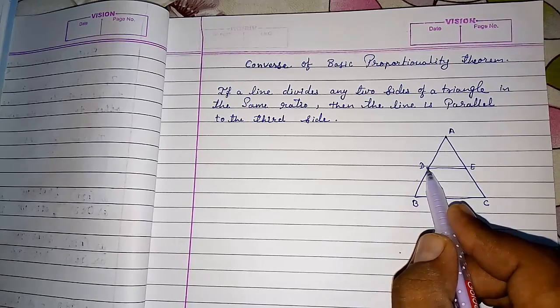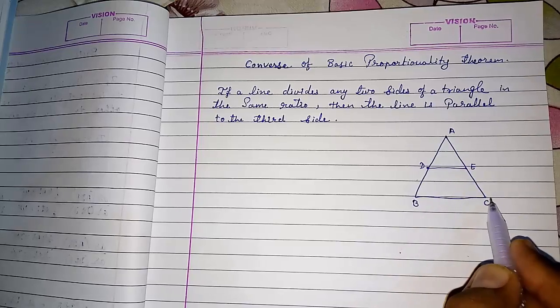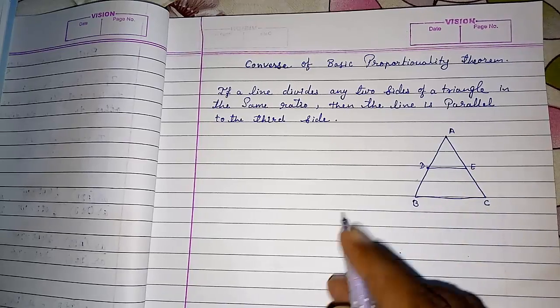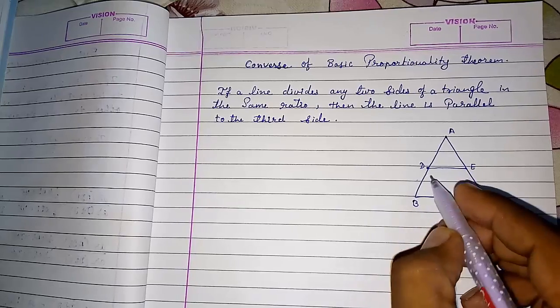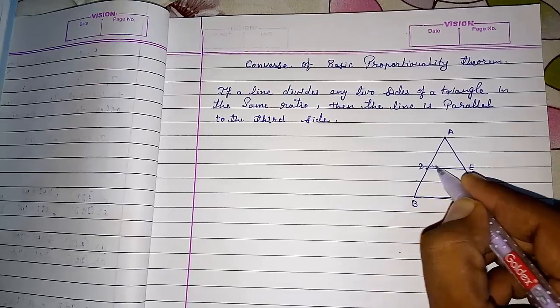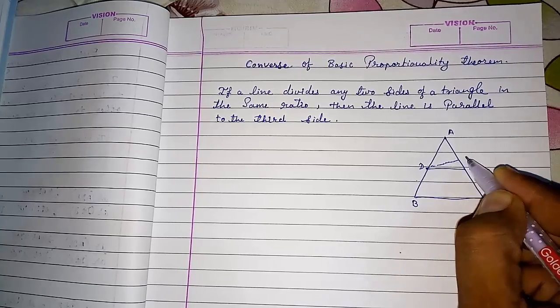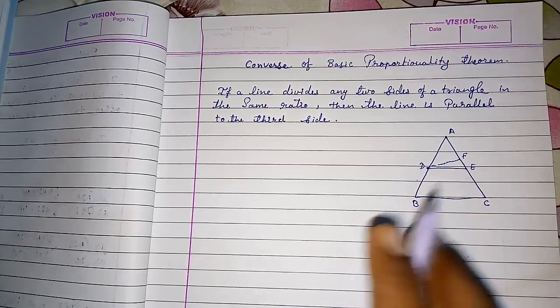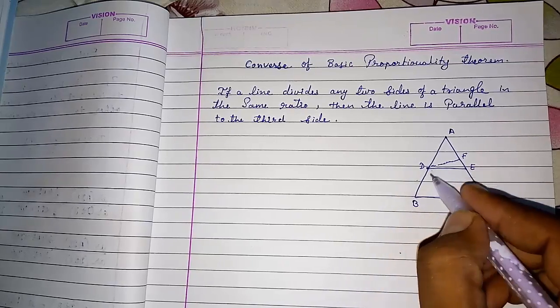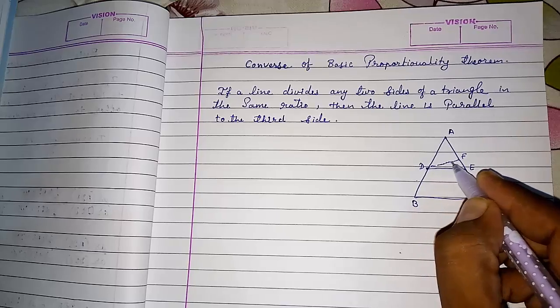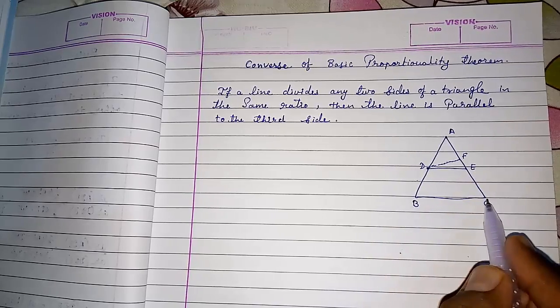So we have to suppose that DE is not parallel to BC and we have to draw another line DF. If DE is not parallel, means one more line will be there which will be parallel to BC. So we have to suppose that DF is parallel to BC.